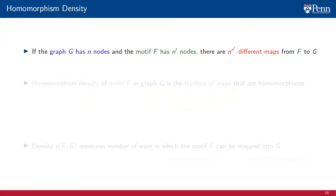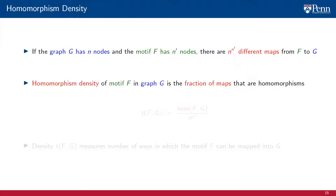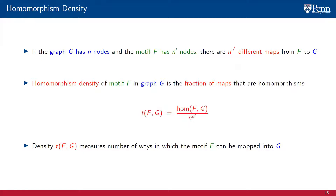Related to the notion of homomorphism count is the notion of homomorphism density. If the graph G has n nodes and the motif F has n' nodes, there are a total of n to the n' different maps from F to G, and only a fraction of these are homomorphisms. We therefore define the homomorphism density of motif F into graph G as the fraction of maps that are homomorphisms — the ratio between the homomorphism count hom(F, G) and the total number of maps n to the n'. We denote this as T(F, G): a relative measure of the number of ways the motif F can be mapped into G while preserving adjacency structure, and therefore a quantity we can expect to settle into a limit.